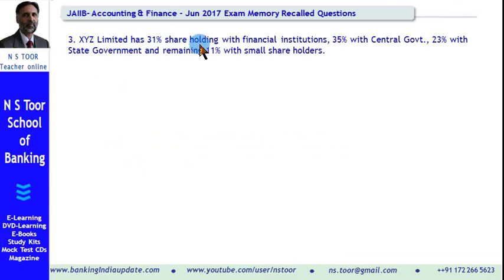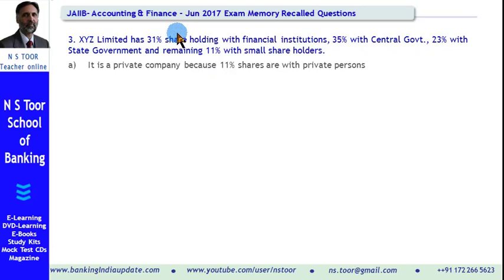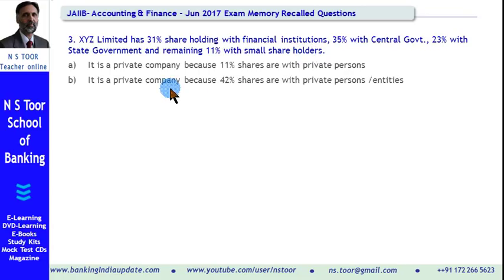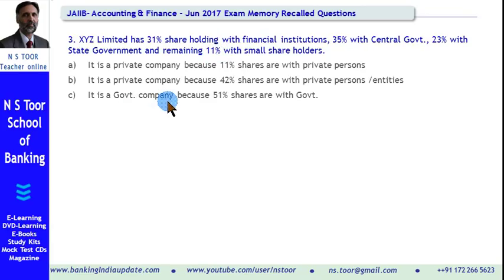Let us now go to question number 3. XYZ Limited has 31% shareholding with financial institutions, 35% with central government, 23% with state governments, and remaining 11% with small shareholders. Option A: It is a private company because 11% shares are with private persons. Option B: It is a private company because 42% shares are held by private persons or entities — 31% with financial institutions and 11% with small shareholders, hence 42%. Option C: It is a government company because 51% shares are with government — 35% with central government and 23% with state government. Option D: It is a semi-government company because only 35% shares are with central government.